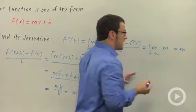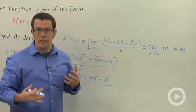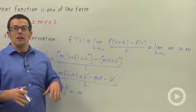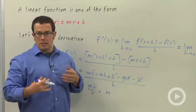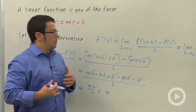And that kind of makes sense, that the derivative of a linear function should just be m, the slope of the line, right? Because the derivative gives us the slope of a curve at any point. And so the slope of a line at any point should be m.